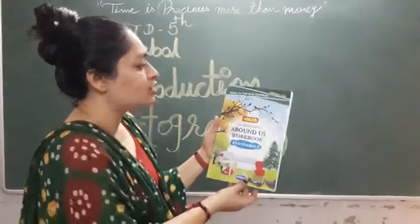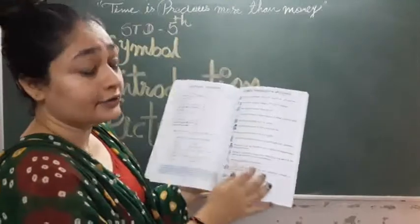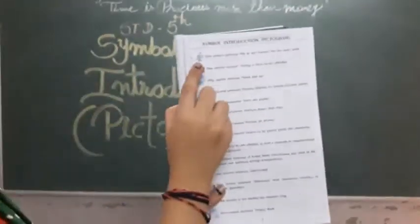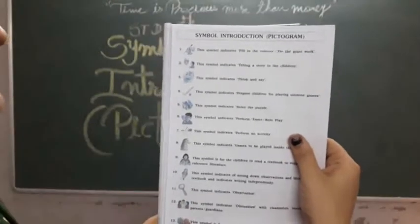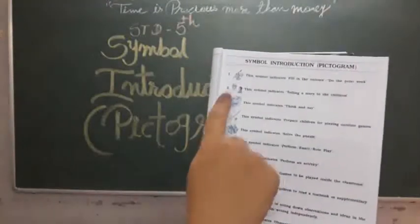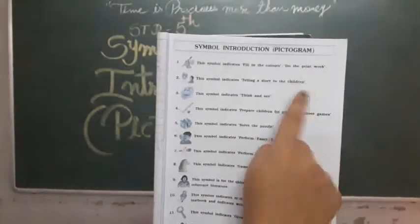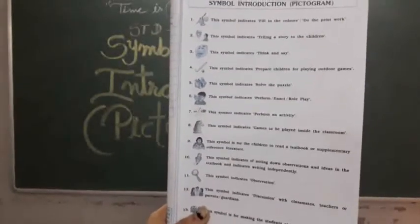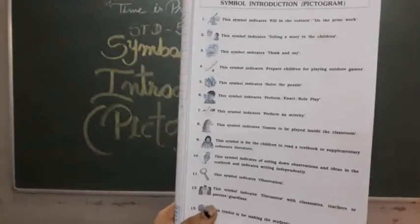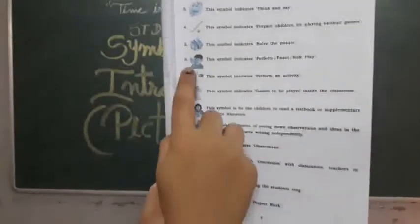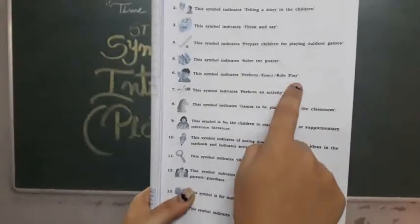This is the new syllabus textbook. In the new textbook introduction, the first symbol indicates fill the colors and do the print work. The third symbol indicates think and see. Number four: this symbol indicates outdoor games and ground games. Number five: this symbol indicates all the puzzles.